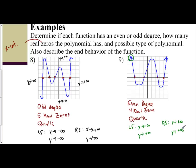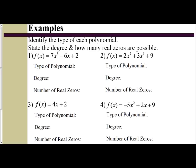So that's some practice with describing your end behavior, even or odd degrees, real zeros, and naming functions. Let's examine how to identify the type of polynomial, the degree, and how many possible real zeros there are. In the first example, we have 7x³ minus 6x plus 2. Since the highest power is 3, that means it's a cubic. The highest power is your degree, and the highest power also states the possible number of real zeros — so there are 3 possible real zeros.